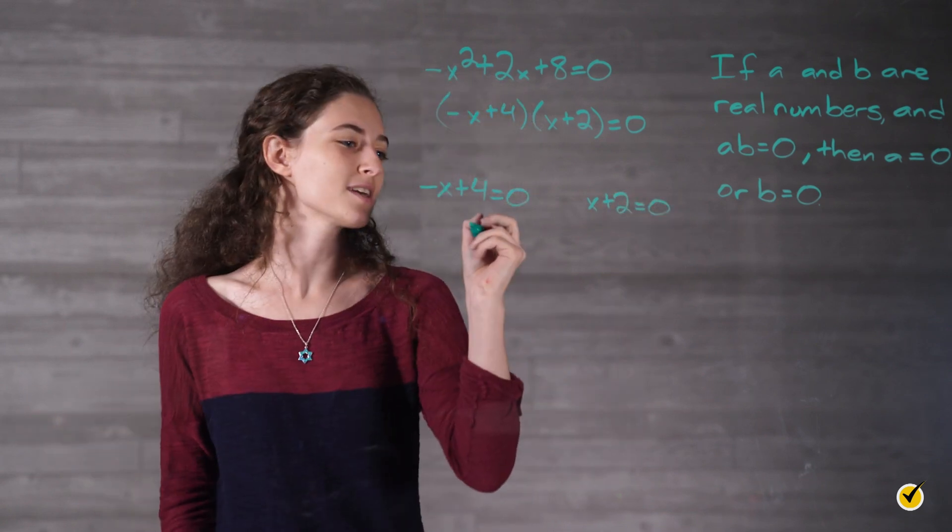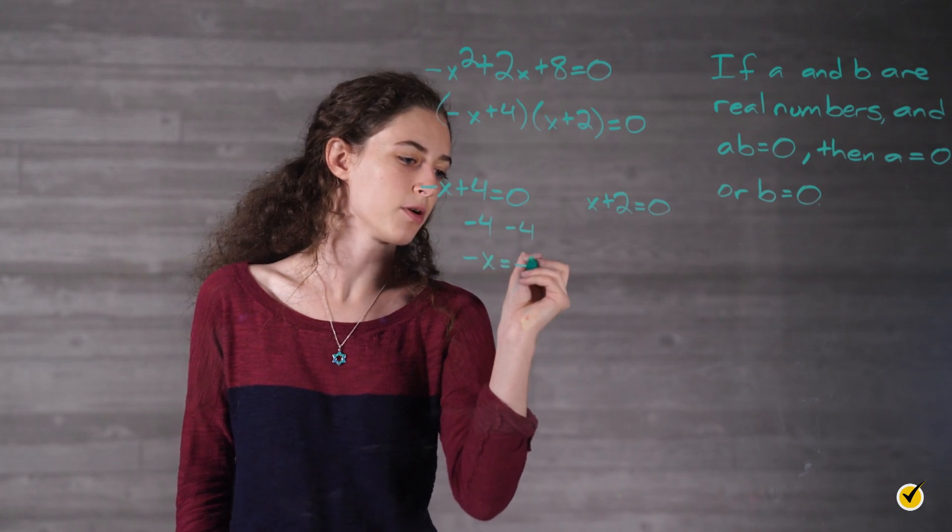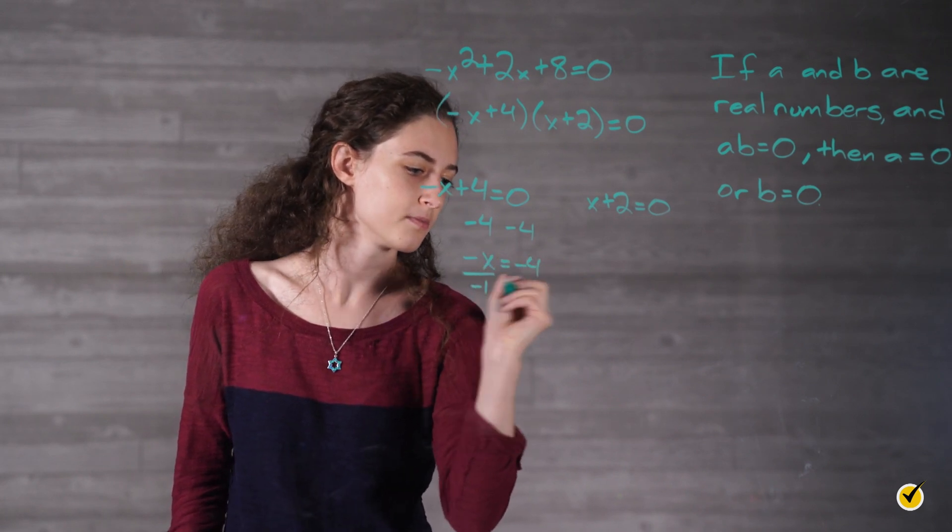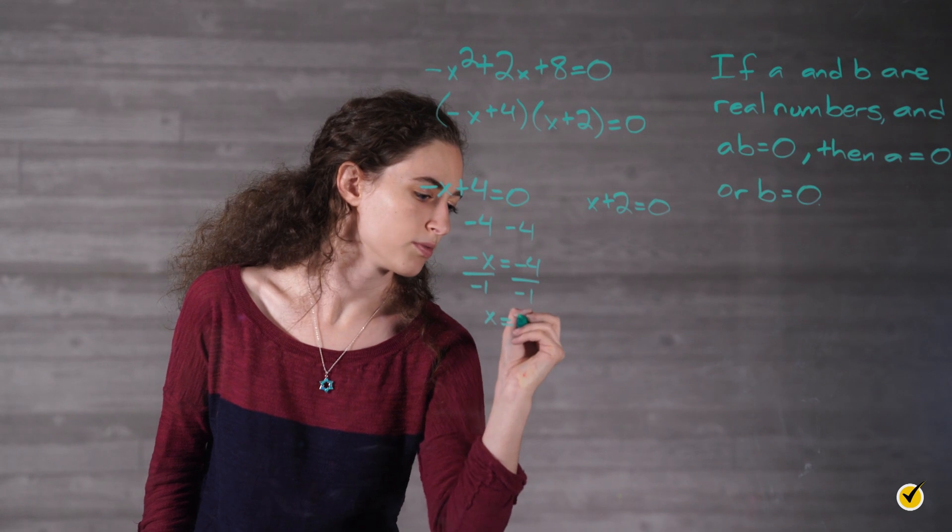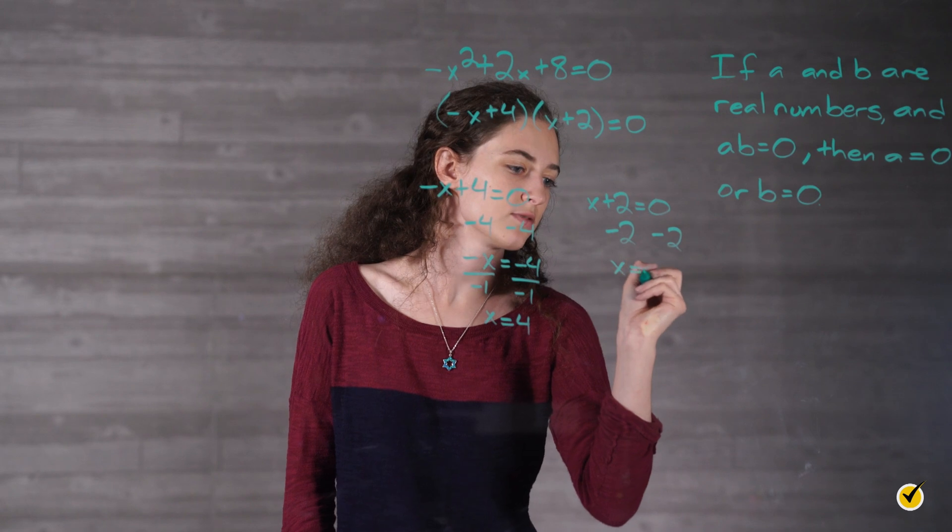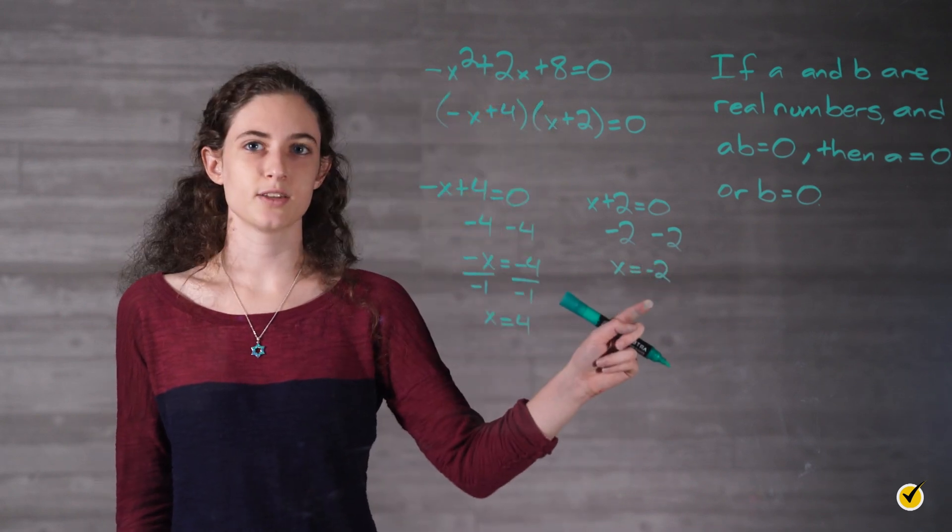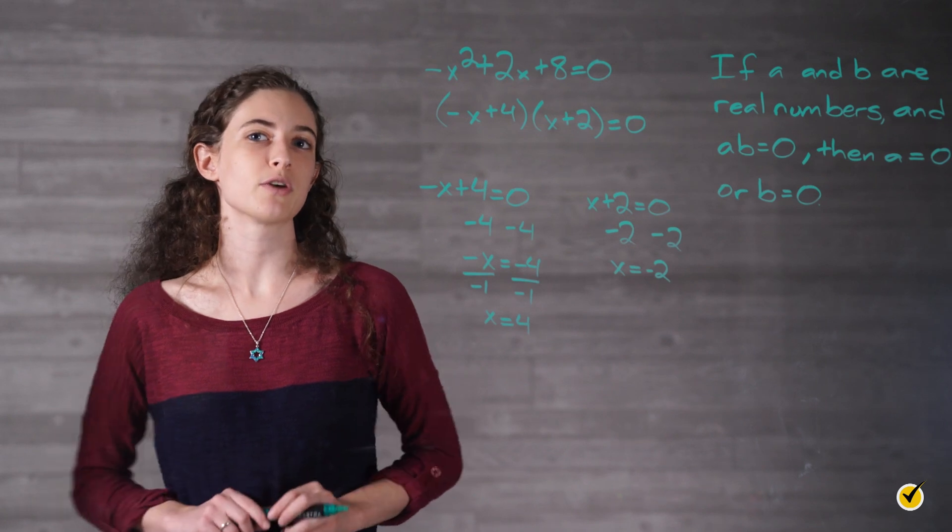So we solved both. We're going to subtract 4 from both sides, which gives us negative x equals negative 4, and then divide by negative 1. We get x equals 4. For this equation, we subtract 2 from both sides, and we're left with x equals negative 2. So our zeros are x equals 4 and x equals negative 2. These match what we found on our graph.